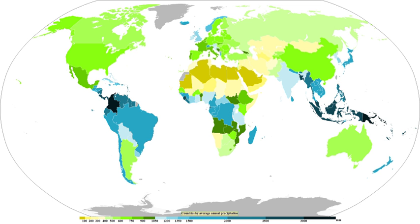The humid subtropical climate zone is where winter rainfall is associated with large storms that the westerlies steer from west to east. Most summer rainfall occurs during thunderstorms and from occasional tropical cyclones. Humid subtropical climates lie on the east side of continents, roughly between latitudes 20 and 40 degrees away from the equator. An oceanic climate is typically found along the west coasts at the middle latitudes of all the world's continents, bordering cool oceans, as well as southeastern Australia, and is accompanied by plentiful precipitation year-round.